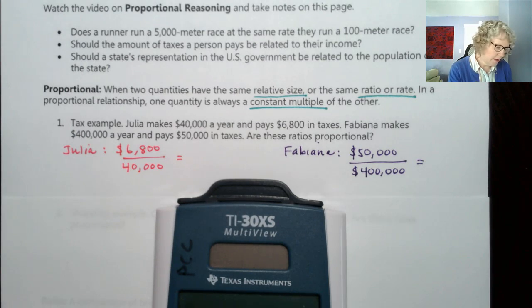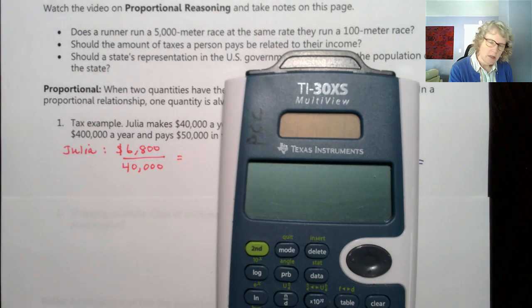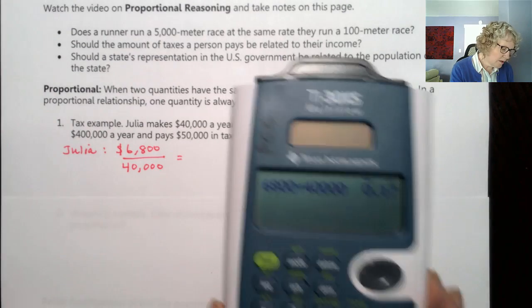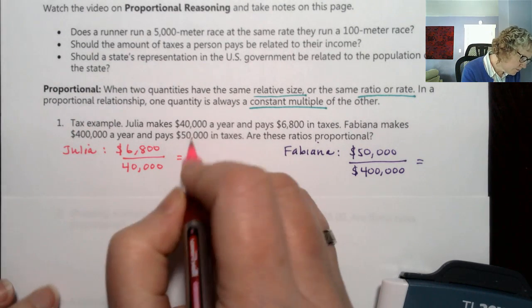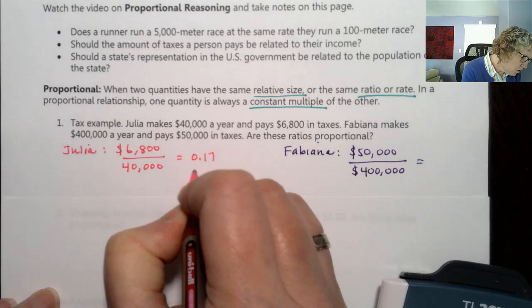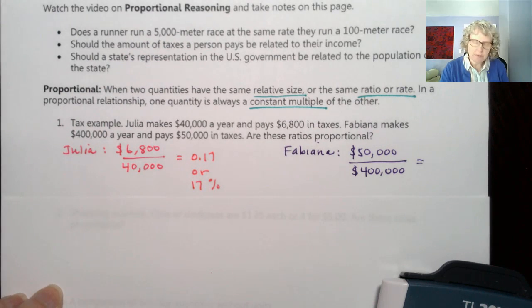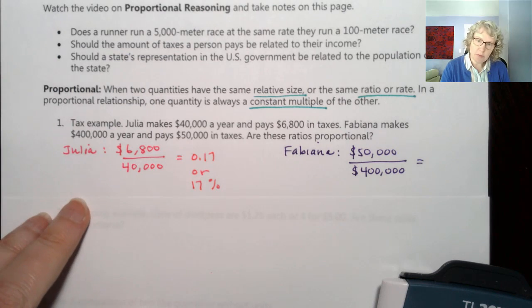Now I could divide it the other way. Either way, it's a comparison. So I could do it the other way if that's what you thought to do. That's a good instinct. So $6,800 divided by $40,000 is $0.17, or if we move the decimal over two places to the right, that's 17%. So Julia's paying 17% of her income.